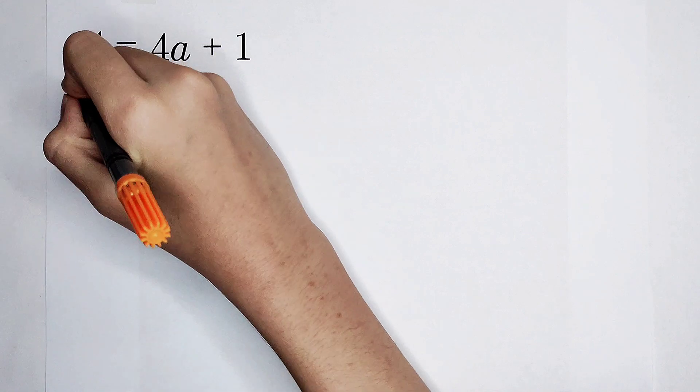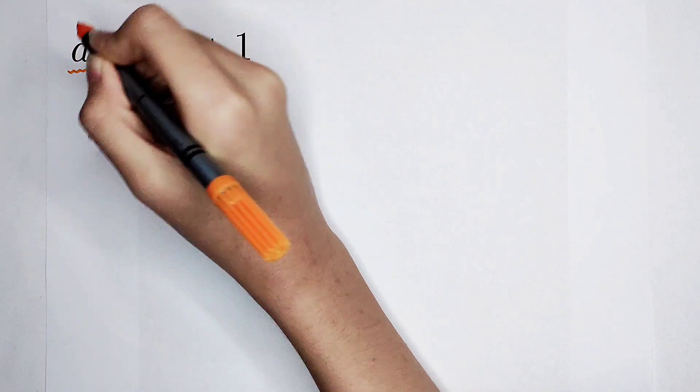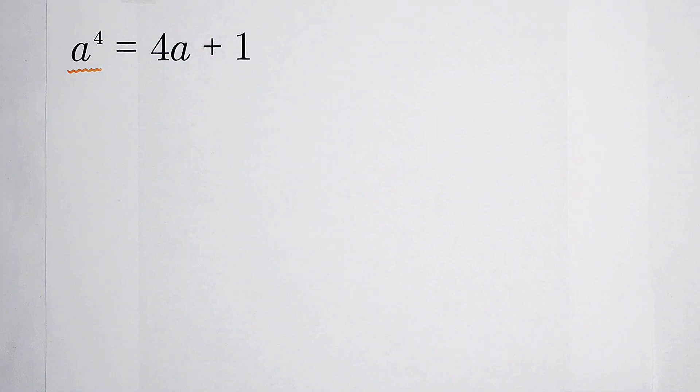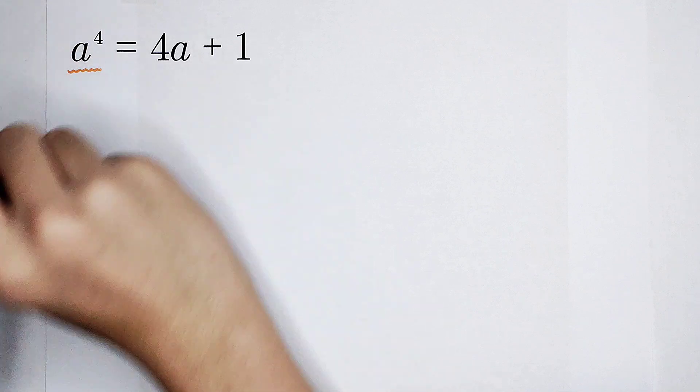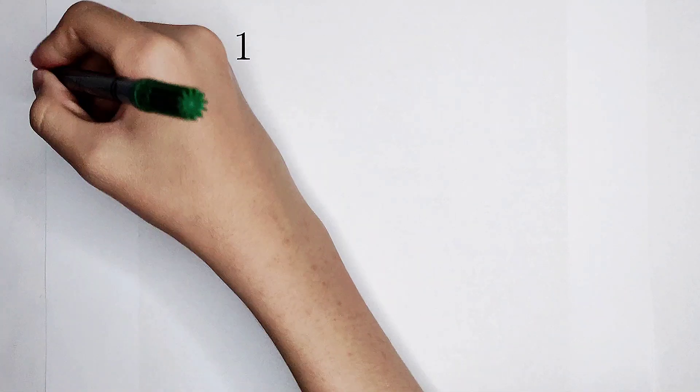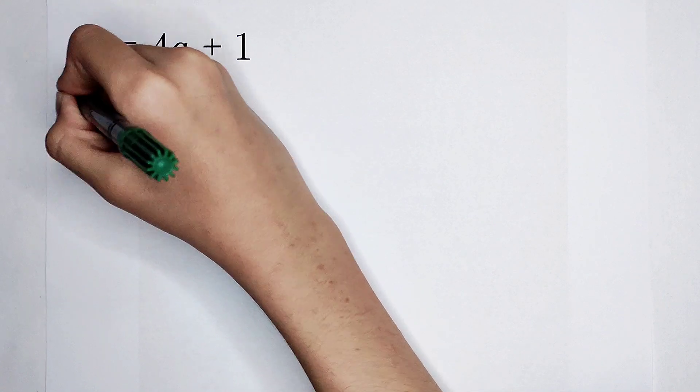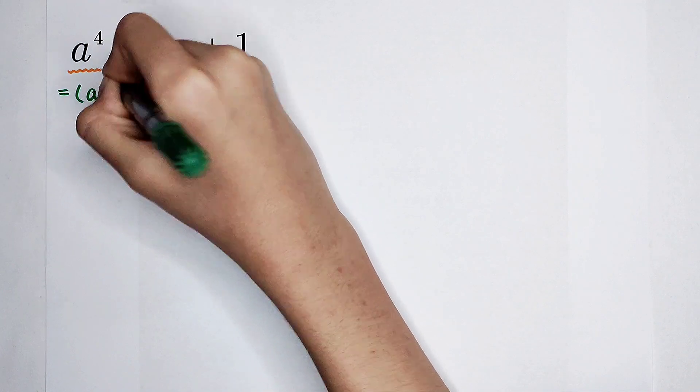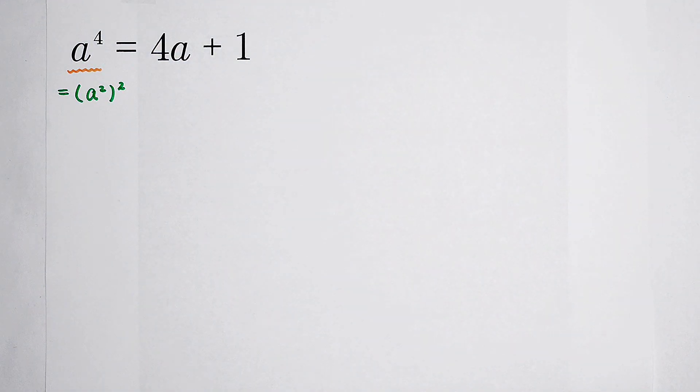For dealing with this question, you have to pay more attention. First, this a to the power of 4 is very nice. It can be regarded as a squared and then all squared. For solving this question, you have to only remember this formula.